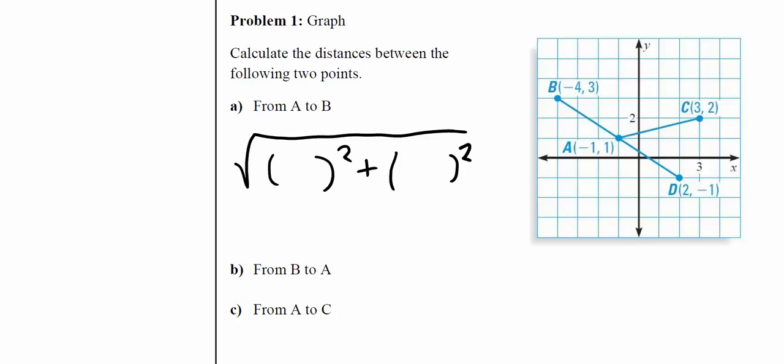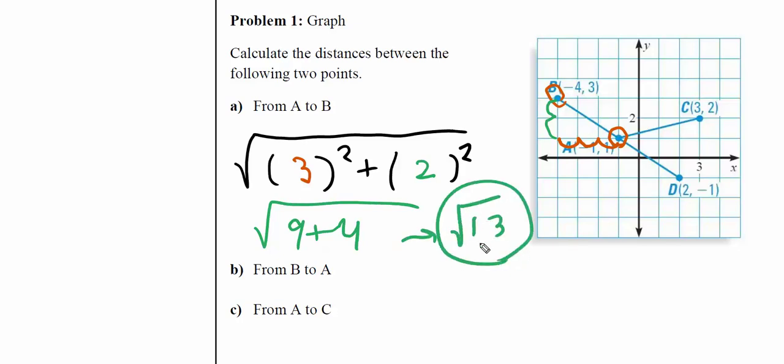If you're given a graph, here's an alternate way that only works with a graph. Look at the x - from this point to this point I travel one, two, three on the x. Then from this point, how many up the y-axis? One, two. This gives us nine plus four, which is radical 13 like we got with algebra.